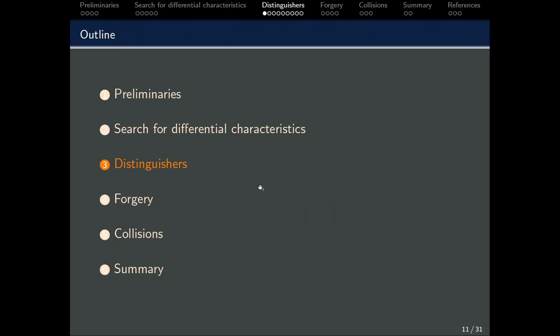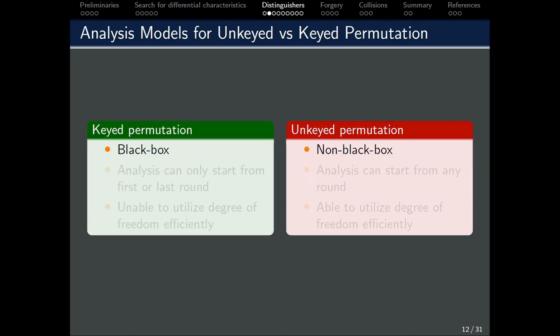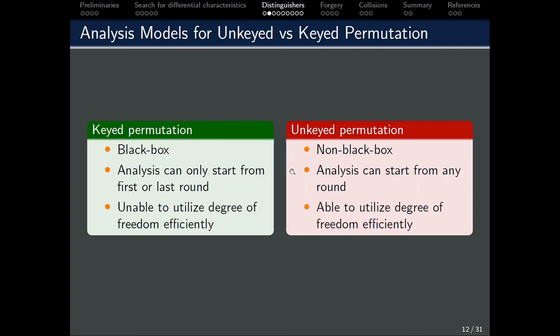Now, with an automated method available, we proceed to generate distinguishers for the ASCON permutation. First of all, we would like to propose a categorization for distinguishers. They will be the keyed permutation and unkeyed permutation. For keyed permutation, we can assume that the key is added in every round. Without the key, we will not be able to know the information as we propagate through the rounds. This is similar to an analysis of a block cipher. For the unkeyed scenario, there is no key involved. This means that we can actually start in the middle and propagate outwards. We can view them as a black box and a non-black box respectively. This is important as in the case of an unkeyed permutation, we will be able to utilize the degree of freedom to fix some constraints and reducing the overall complexities of the distinguishers.